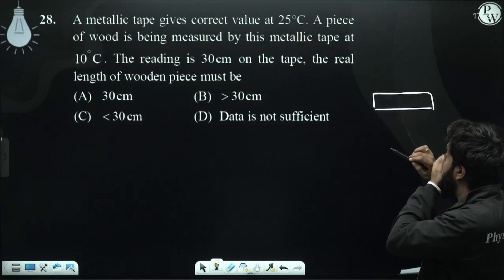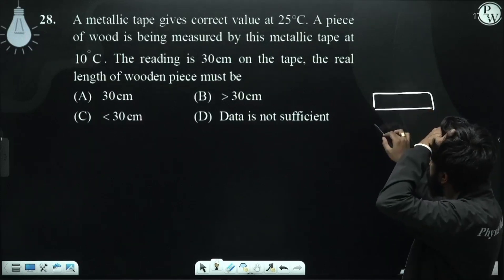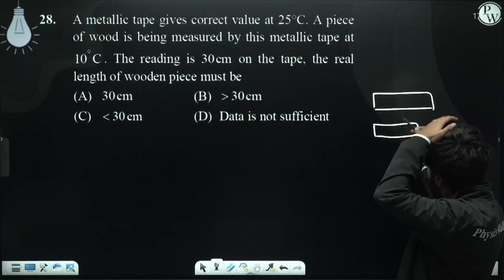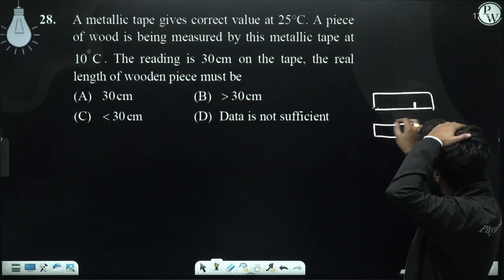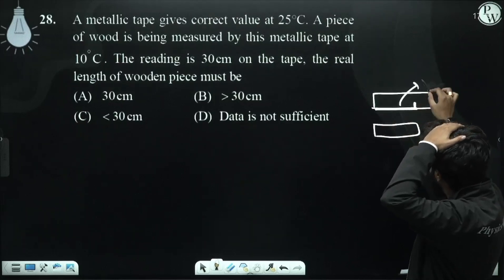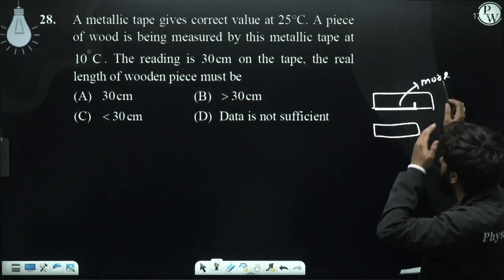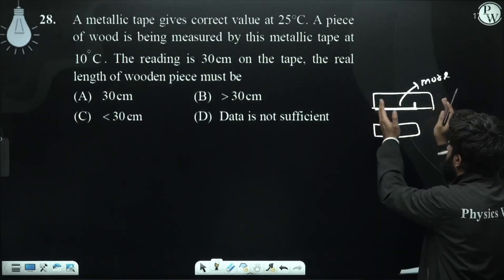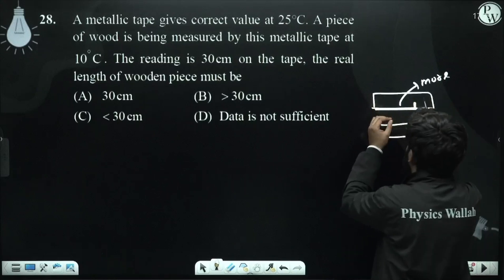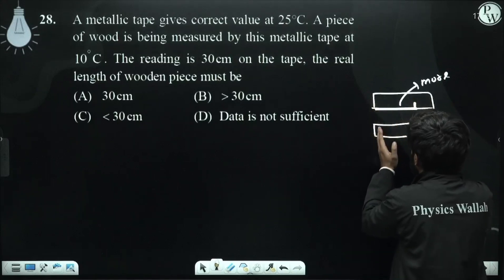At 10 degrees, the tape will be compressed. So the reading will be more because at 10 degrees there will be compression. When there is compression, when the divisions are closer together, then the reading will be more.